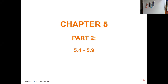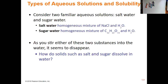Let's look at the last part of chapter five for today. We're going to start by talking about different types of aqueous solutions and how solutions in general dissolve. We have two different types of solutions: solutions of ionic compounds and solutions of molecular compounds. You have to remember the difference between ionic and molecular compounds to really help you focus in on what's happening here.